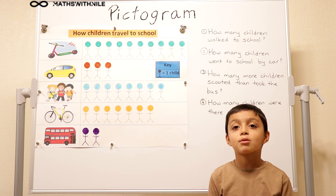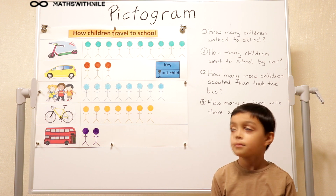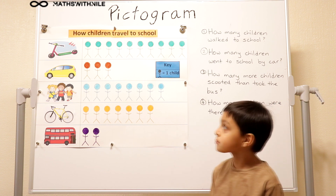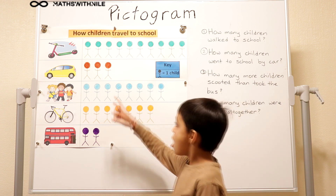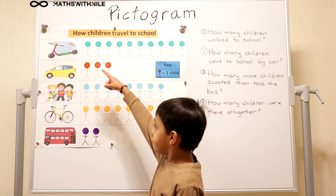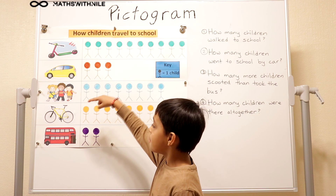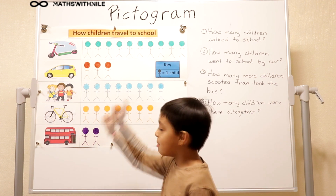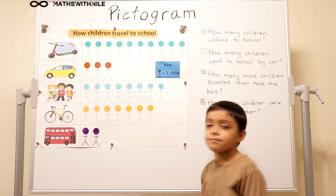How do you travel to school? I sometimes walk and I sometimes go on my scooter. Okay, and what options do we have in that chart there? Scooter, car, walk, bicycle, and bus. Very good.